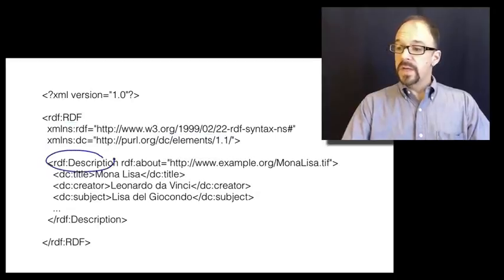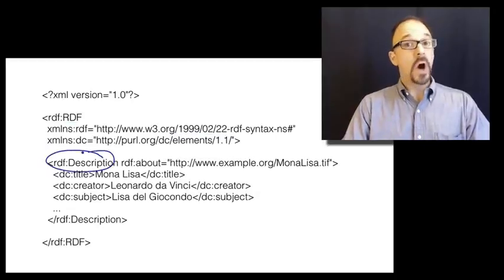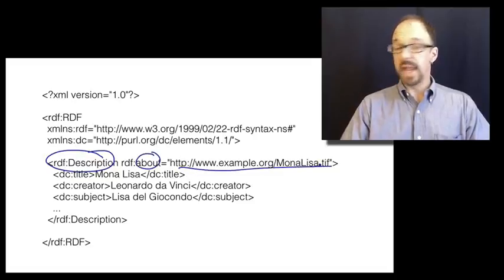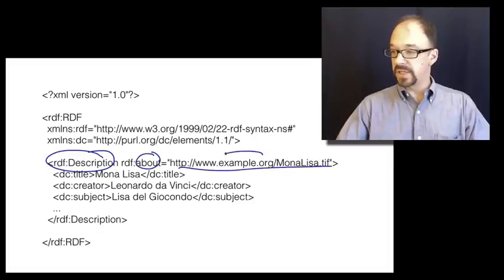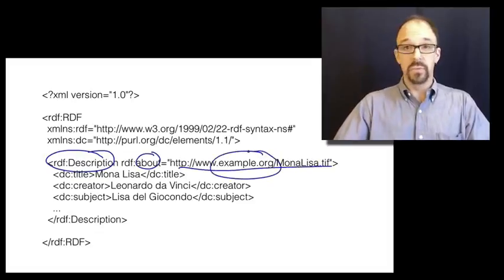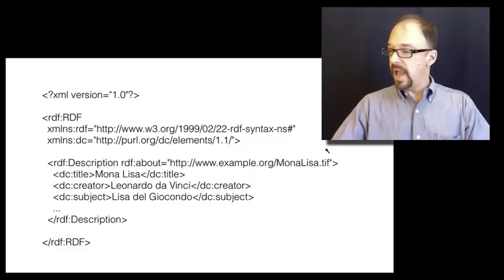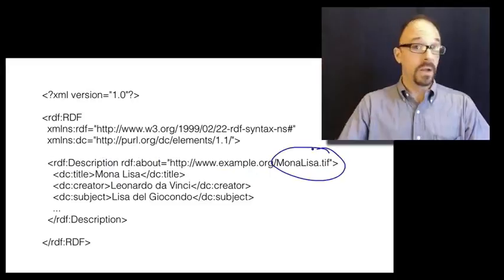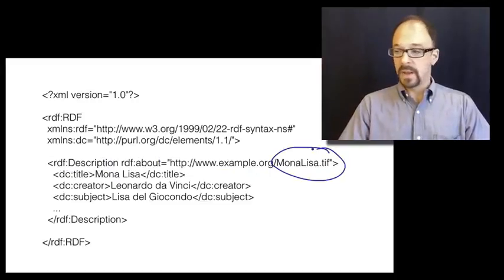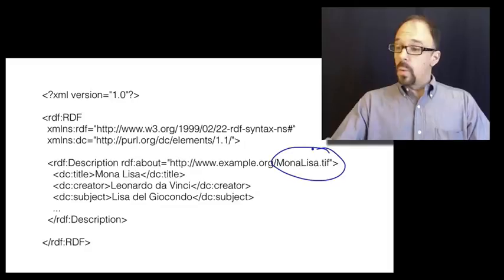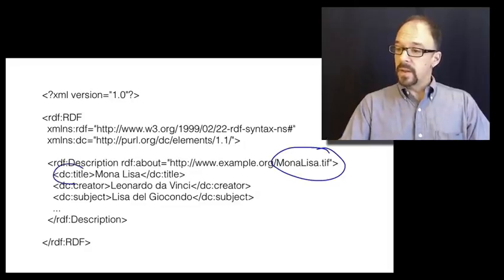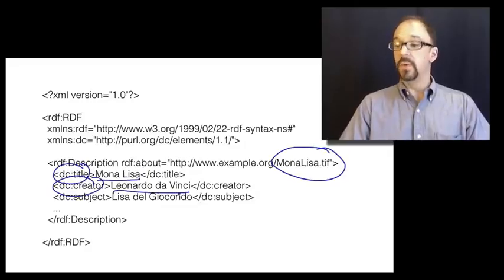Then, we declare that this is an RDF description about the following resource, and this is just an example—there's not any real file at this address, but let's just say we're describing a TIFF file called monalisa.tiff. We have the Dublin Core title and the value, the Dublin Core creator and the value, etc. And you can have as many of these as you want.